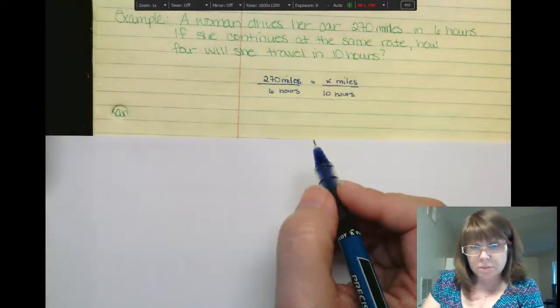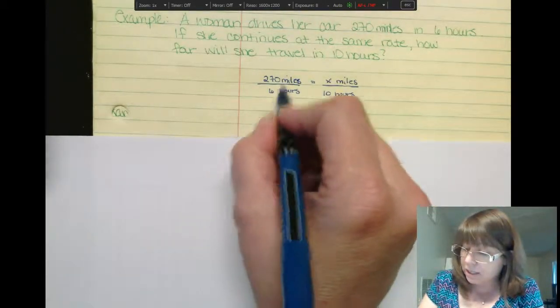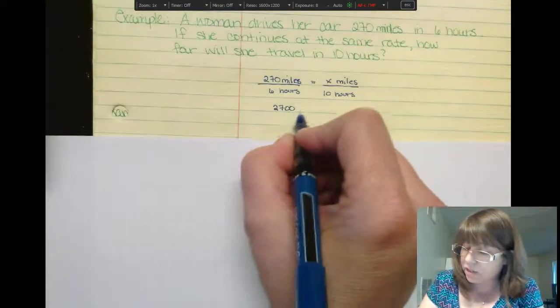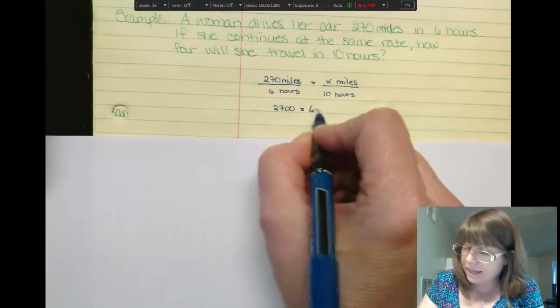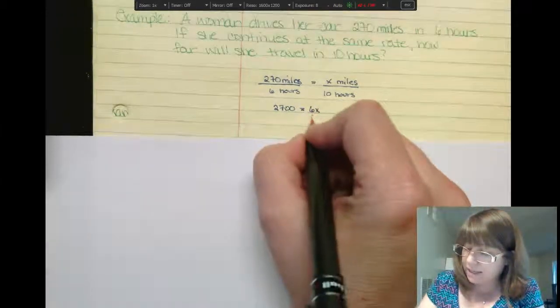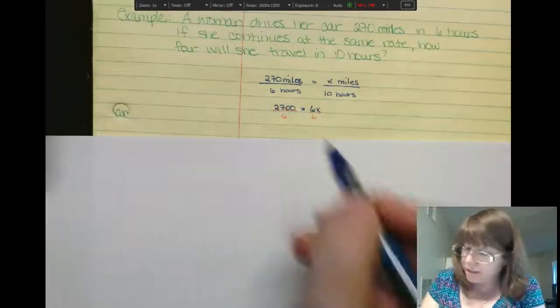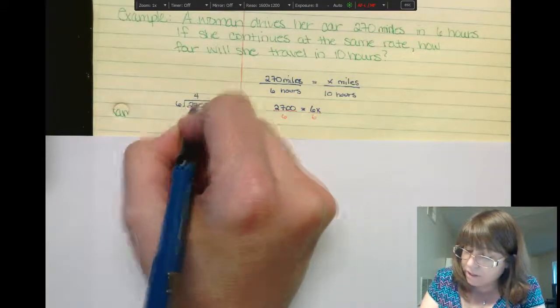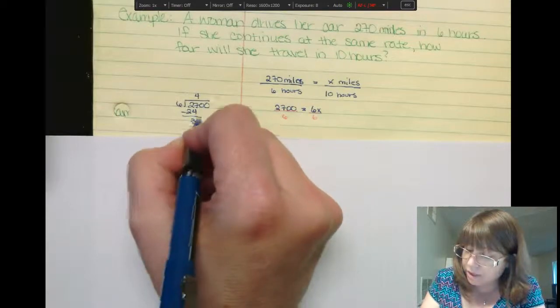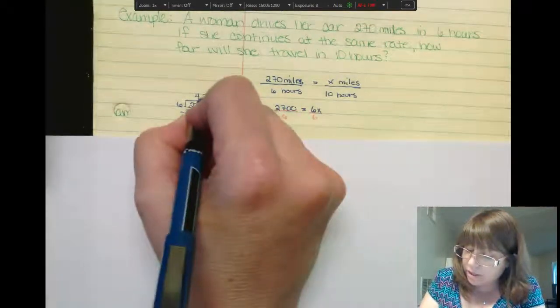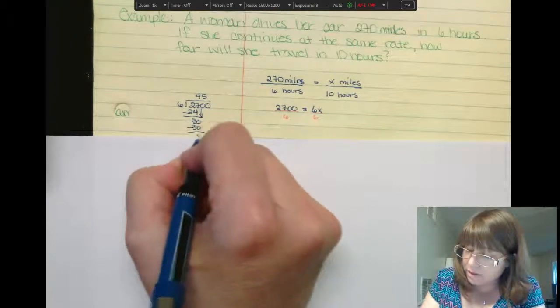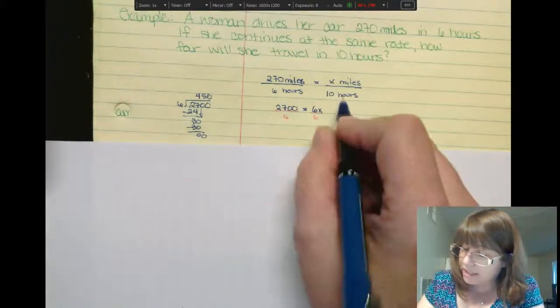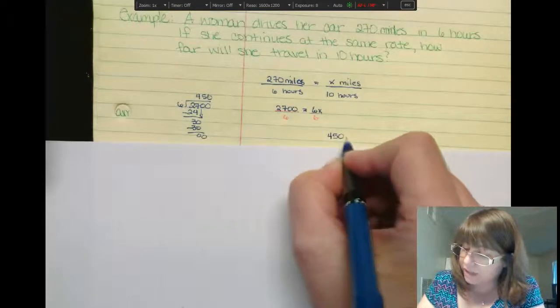So let's use what we know about proportions to solve this problem. I'm going to multiply my extremes, multiply my means. So that's going to be 270 times 10 is 2700. 6 times x is 6x. Now I'm going to divide each side by 6. So now I have 6 goes into 2700, 4 times 24, 30. Let's bring down the 0. 6 goes into 30 5 times. Bring down the 0. 6 goes into 0 times. So we expect that she will drive in 10 hours a total of 450 miles.